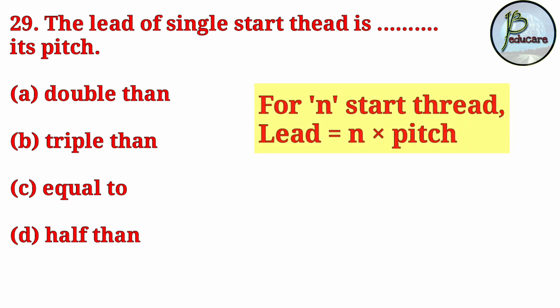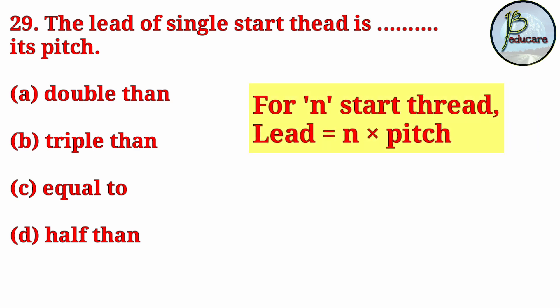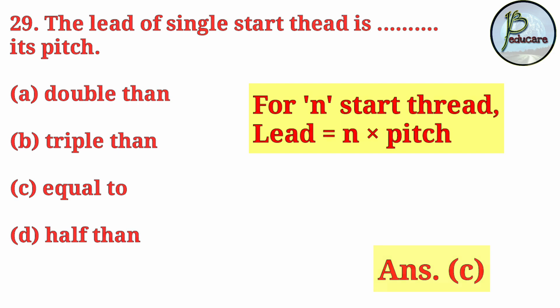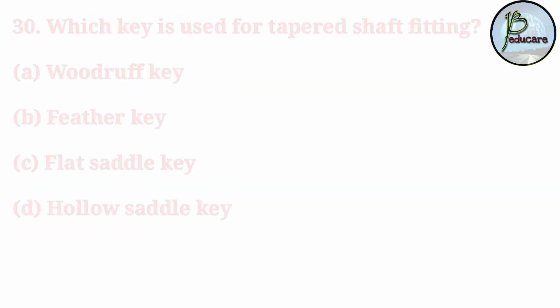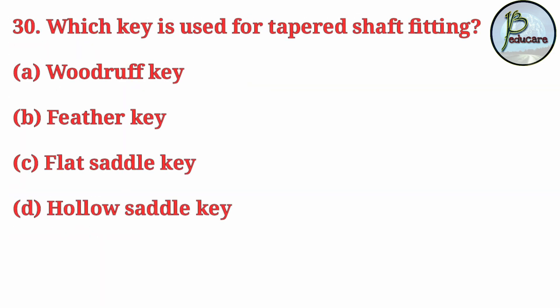Next question: the lead of a single start thread is equal to its pitch. The formula states: for an n-start thread, lead equals n multiplied by pitch. For a single start thread, n equals 1, therefore lead equals pitch. The correct answer is option C.